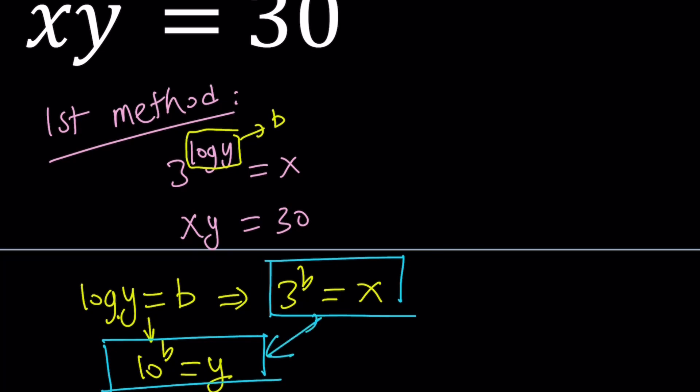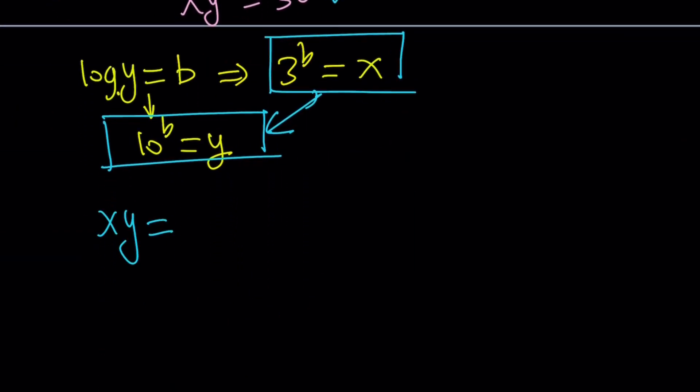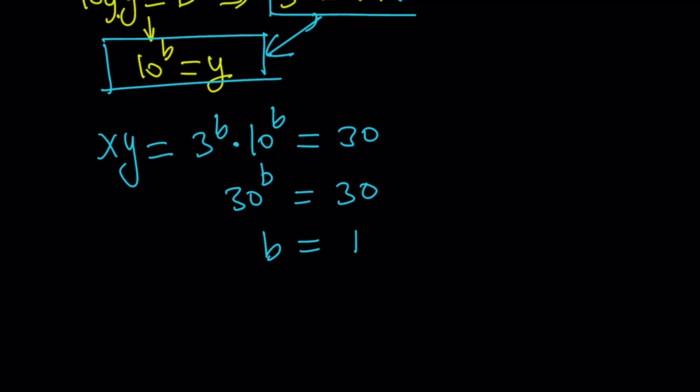And now, the second equation gives us the product. So, we can actually use it. Put these two together. x, y equals 30. x, y is 3 to the power b times 10 to the power b. And that is equal to 30. But how do you multiply these two exponentials? They have the same exponent, different bases. So, we can just multiply the bases. This becomes 30 to the power b because 3 times 10 equals 30. Equals 30. We know this. Any number to the first power is the same number. Therefore, from here, we get a single result. b equals 1.